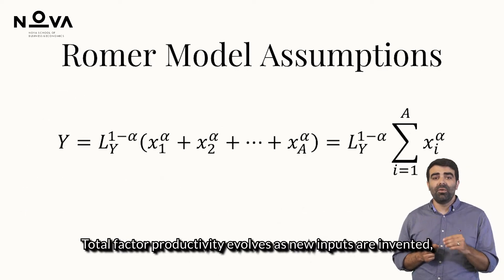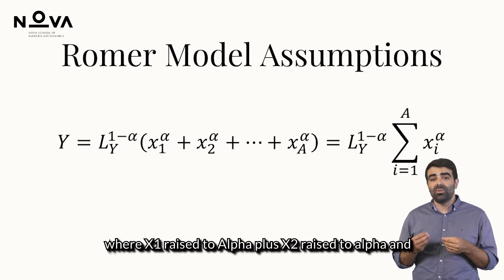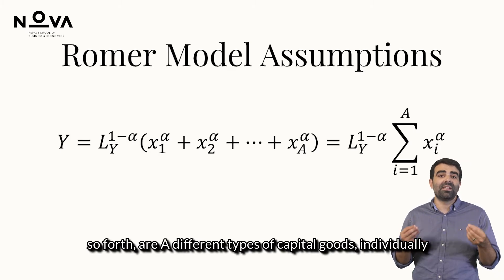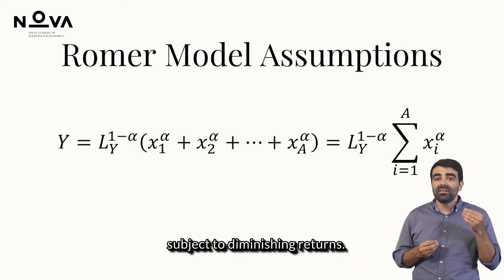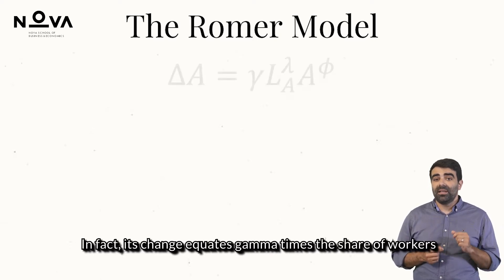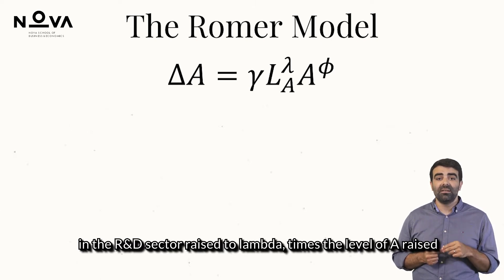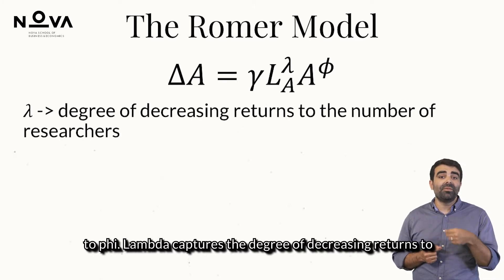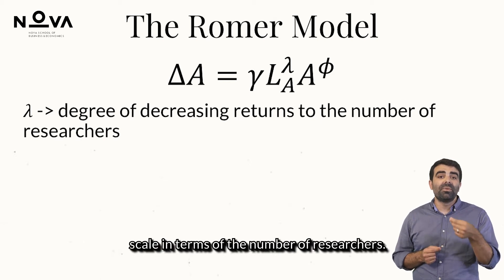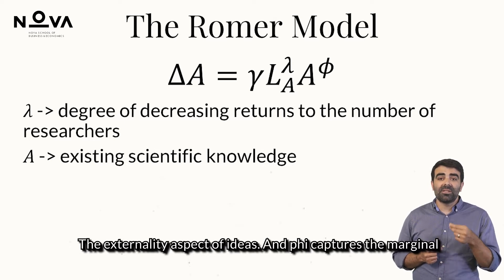Total factor productivity evolves as new inputs are invented, where X_1 raised to alpha plus X_2 raised to alpha and so forth are A different types of capital goods, individually subject to diminishing returns. In this framework, A — the number of different capital goods — is not fixed over time. In fact, its change equates gamma times the share of workers in the R&D sector raised to lambda times the level of A raised to phi. Lambda captures the degree of decreasing returns to scale in terms of the number of researchers, and A captures the existing scientific knowledge — the externality aspect of ideas.